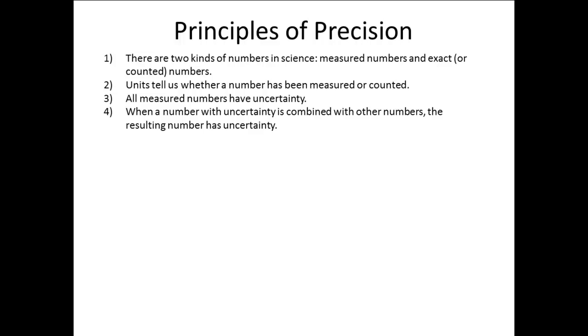4. When a number with uncertainty is combined with other numbers, the resulting number has uncertainty. Whenever we combine measured numbers, regardless of the mathematical operation, addition, subtraction, multiplication, division, or whatever else, the answer has uncertainty as well, even if the calculator gives us a number that seems to be exact.